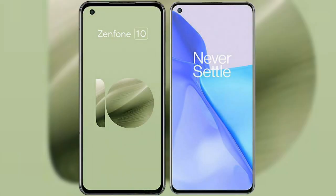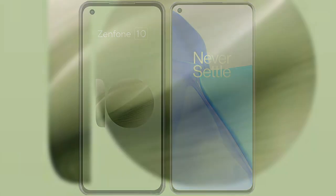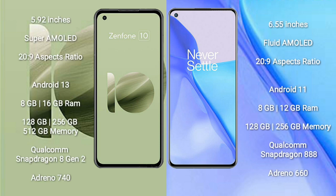I will compare the new Asus Zenfone 10 with OnePlus 9. Asus Zenfone 10 comes with a 5.92-inch Super AMOLED display. OnePlus 9 comes with a 6.55-inch flat AMOLED display.